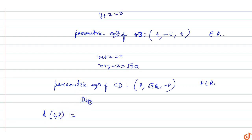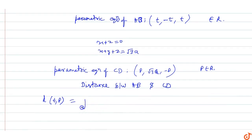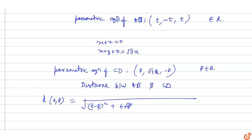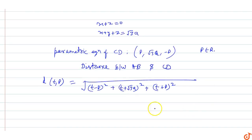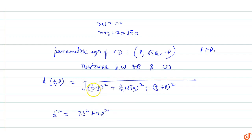The distance squared d² between AB and CD in terms of parameters t and p expands to: d² = (t-p)² + (-t - √3a)² + (t+p)², which simplifies to 3t² + 2p² - 2tp + 2tp canceling out, plus cross terms, giving 3t² + 2p² + 2√3a·t + 3a².